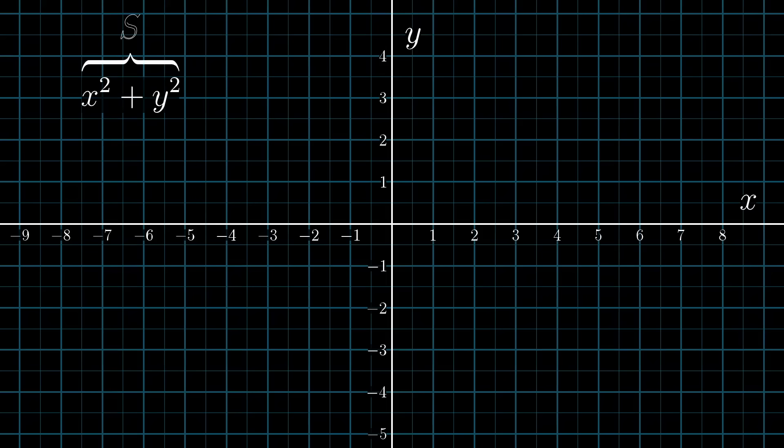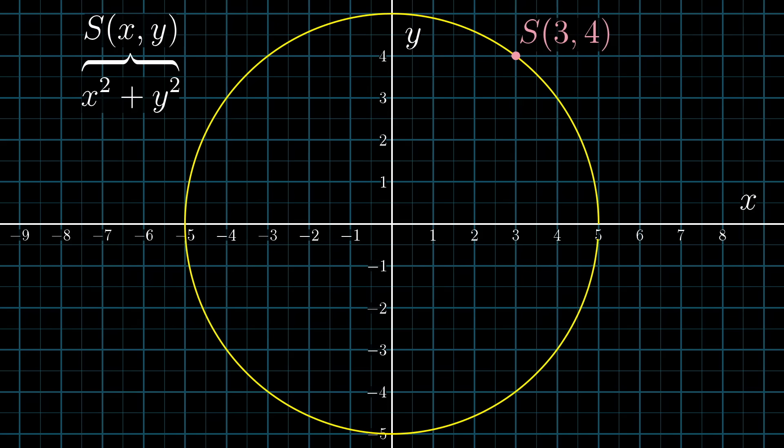Let me show you a nice way to think about this. Let's give this expression x² + y² a name, maybe S. S is essentially a function of two variables. It takes every point (x,y) on the plane and associates it with a number. For points on this circle, that number happens to be 25. If you stepped off the circle away from the center, that value would be bigger. For other points (x,y) closer to the origin, that value would be smaller.